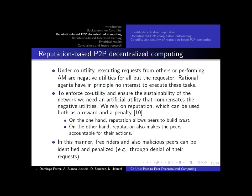Under co-utility, executing requests for others or performing accountability management are negative utilities for all but the requester. Rational agents would, in principle, have no incentive to execute these tasks. To enforce co-utility and sustain the protocol and the correctness of the computation, we rely on reputations. This reputation will allow peers to build trust and, on the other hand, it helps holding peers accountable for their actions. In this manner, free riders and also malicious peers can be identified and penalized.